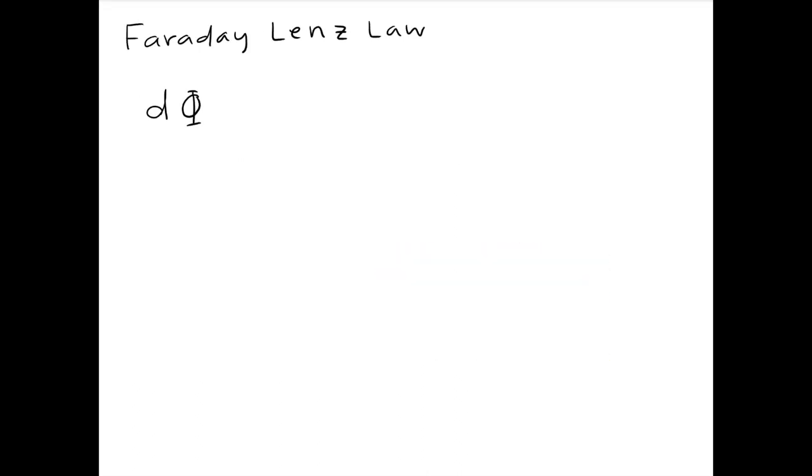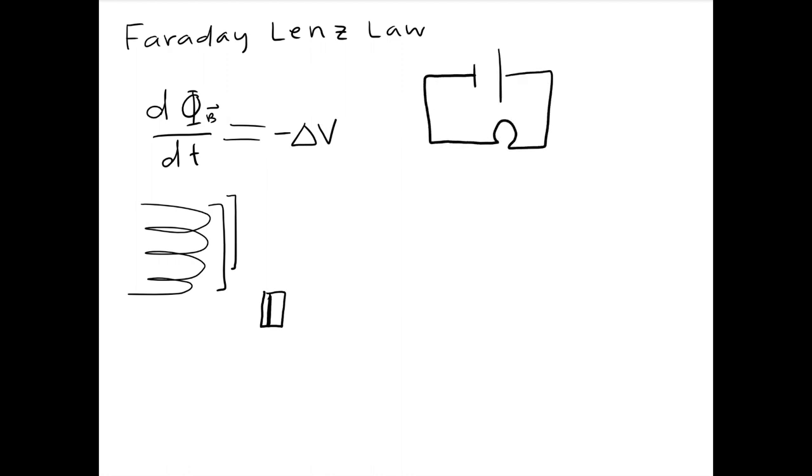Faraday-Lenz Law explains that a change in magnetic flux, i.e., the card being swiped through the card reader, induces a change in voltage. Voltage is the change of potential energy in a circuit. In this case, a light bulb is connected to a battery which supplies 10 volts. There's a drop of 10 volts that supplies energy to the light bulb, which lights up. This represents the change in potential energy.